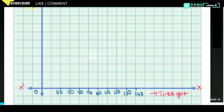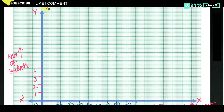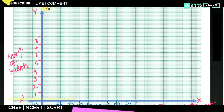On the x-axis we are taking the intelligent quotient (IQ) intervals. On the y-axis — this is the y-axis — we are taking the frequency, that is the number of students. Let's give values for the y-axis also: 1, 2, 3, 4, 5, 6, 7, 8, 9, 10.